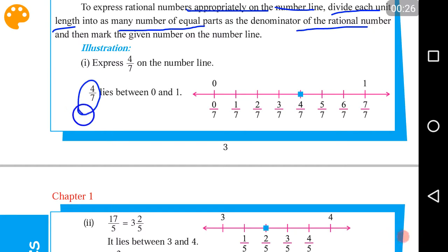here you see 4 by 7. So, what we have to do is divide 0 and 1. The unit length here is from 0 to 1 because 4 by 7 lies between 0 and 1. So, here you can see the denominator is 7.